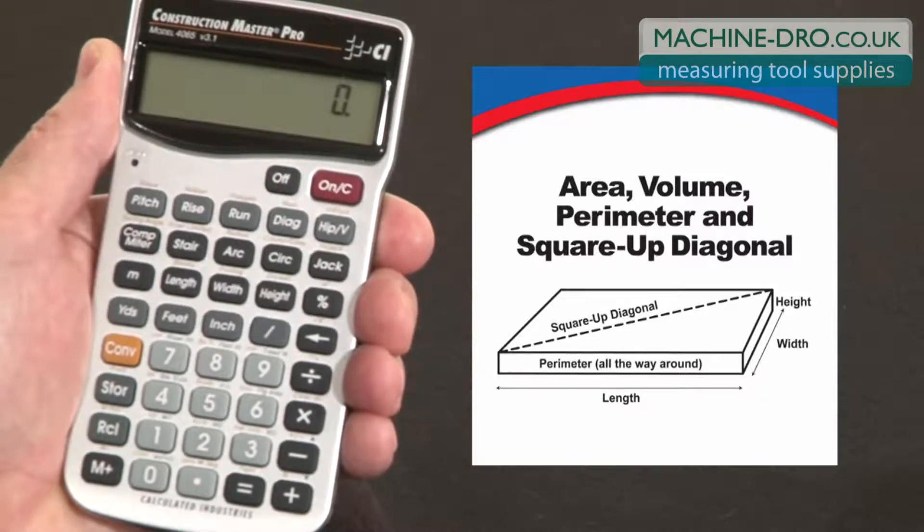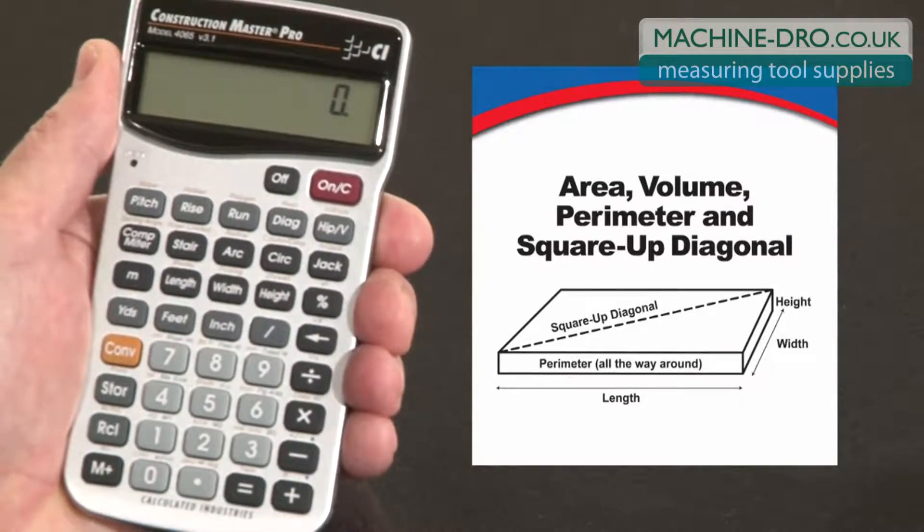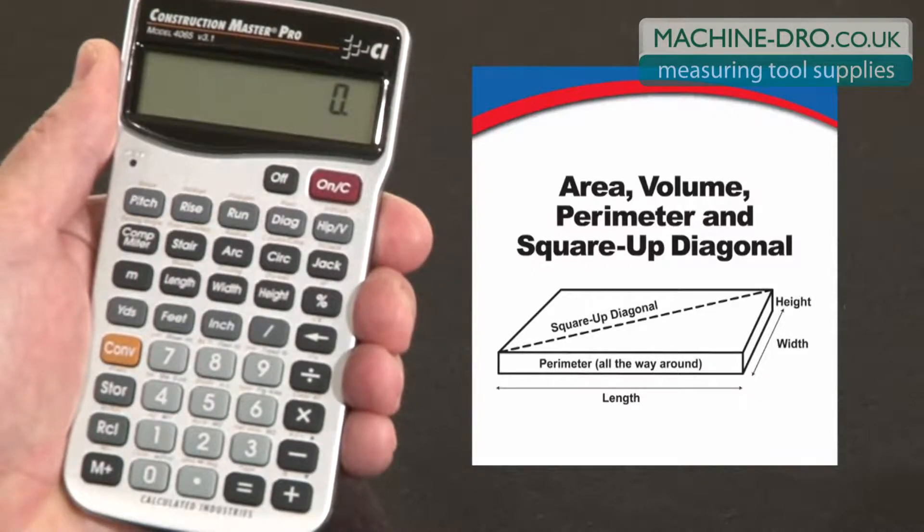And keep in mind, the keystrokes for this are exactly the same if you're using the Construction Master Pro desktop model. These functions give you a whole series of answers from just one input.